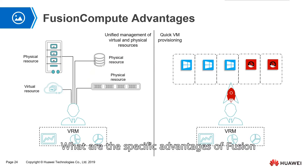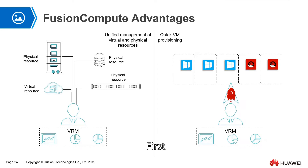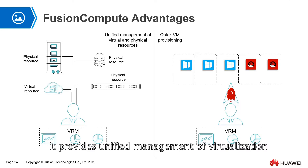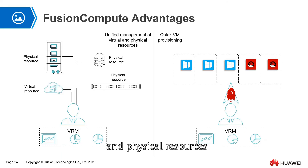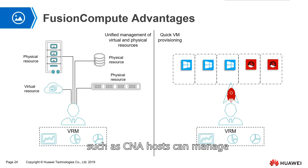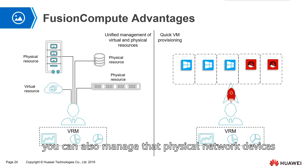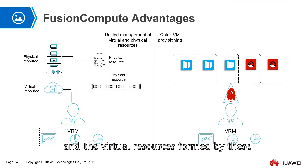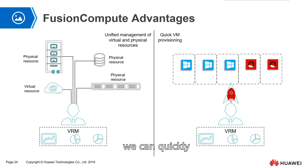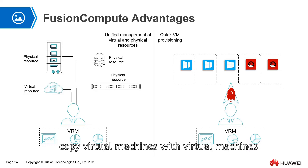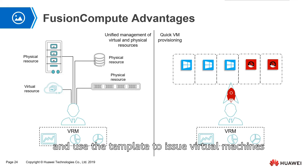What are the specific advantages of Fusion Compute? First, it provides unified management of virtualization and physical resources. It can manage physical computing resources such as CNA hosts, physical storage resources by adding storage devices, and physical network devices, as well as the virtual resources formed by these physical resources. Second, through VRM, we can quickly deploy virtual machines, copy virtual machines, and use templates to issue virtual machines.